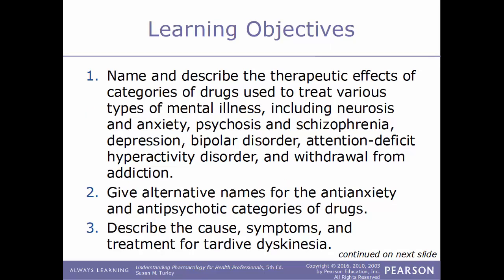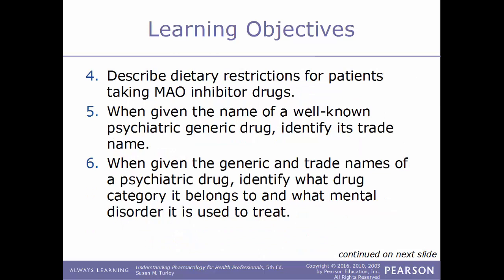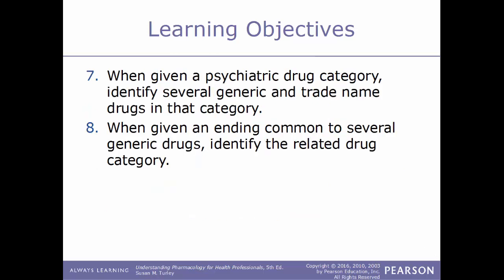The learning objectives for this chapter: name and describe the therapeutic effects of categories of drugs used to treat various types of mental illness including neurosis and anxiety, psychosis and schizophrenia, depression, bipolar disorder, attention deficit hyperactivity disorder, and withdrawal from addiction. Give alternative names for the anti-anxiety and antipsychotic categories of drugs. Describe the cause, symptoms, and treatments for tardive dyskinesia. Describe dietary restrictions for patients taking MAO inhibitor drugs. When given the name of a well-known psychiatric generic drug, identify the trade name. When given the generic and trade names of a psychiatric drug, identify what drug category it belongs to and what disorder it is used to treat. When given a psychiatric drug category, identify several generic and trade names in that category. Lastly, when given an ending common to several generic drugs, identify the related drug category.